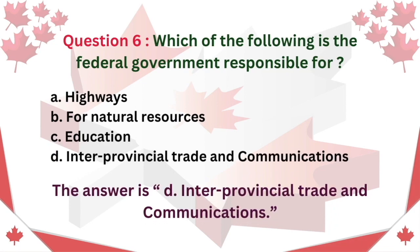Question 6: Which of the following is the Federal Government responsible for? A. Highways. B. Natural Resources. C. Education. D. Interprovincial Trade and Communications. The answer is D. Interprovincial Trade and Communications.